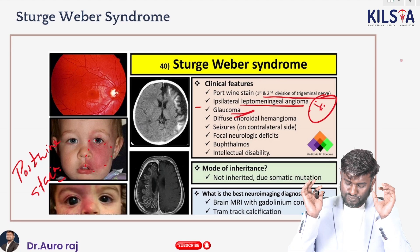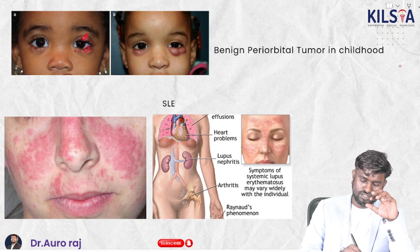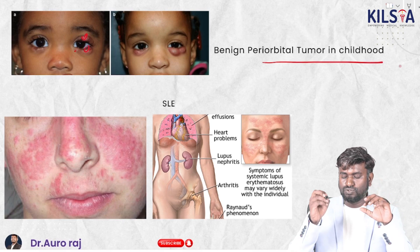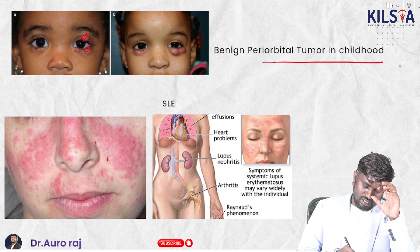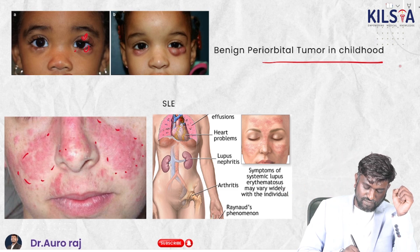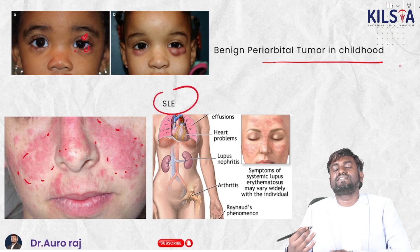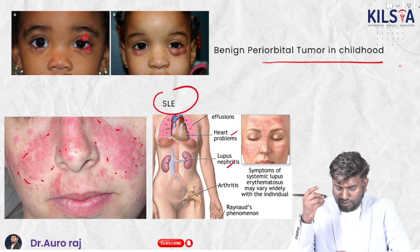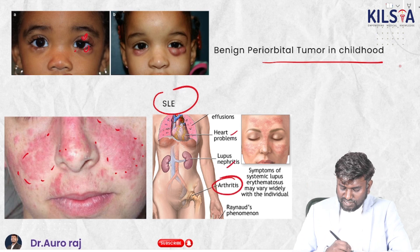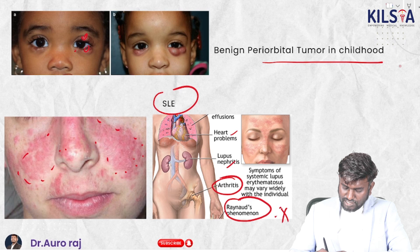This image is of a benign periorbital tumor. This image showing a butterfly rash is systemic lupus erythematosus (SLE). As the name implies, SLE involves multiple systems: heart problems, lupus nephritis, and arthritis. Also remember Raynaud's phenomenon as another important feature of SLE.